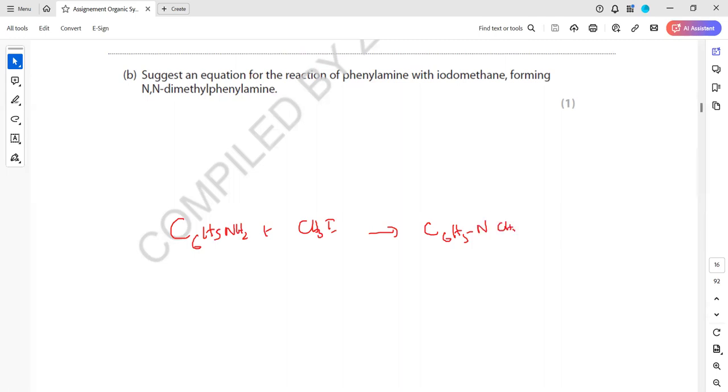So equation for phenylamide forming N,N-dimethyl. So what should be the other product? Because these two hydrogens are taken by the methyl groups. So hydrogen will be removed. So it will produce hydrogen iodide. And the equation must be balanced. So two methyl groups we need. So two methyl groups, and hydrogen and iodine also two. So two. So this is the equation.